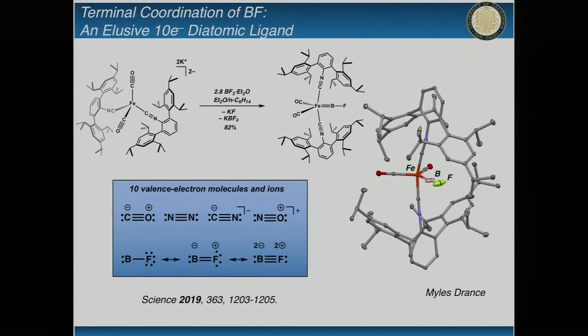We were able to use this particular iron compound to make this compound here, which was the first example of a terminally coordinated boron monofluoride. Now I'm taking you down the rabbit hole even more. Why this is important is that everybody is very familiar with these small molecules - carbon monoxide, dinitrogen makes up 80% of our atmosphere, the cyanide ion if you're not familiar, you should be to definitely stay away from it.